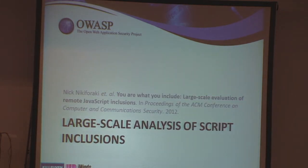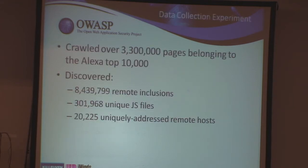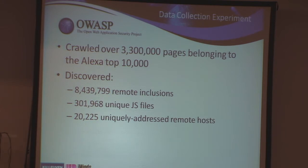To give you a better idea of how websites are using third-party JavaScript, I'll give some results from a large-scale analysis of script inclusions done by Nick and his team together with people from UCSB. During their experiment they crawled domains from the Alexa top 10,000, crawling around 500 pages per domain, resulting in 3.3 million pages visited. They found about 8.5 remote inclusions happening on average per page, reducible to 300,000 unique JavaScript file URLs served from about 20,000 domains — so it's actually happening quite a lot in practice.